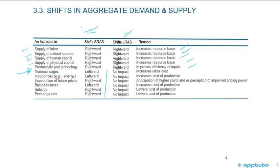Now we get into where there are some differences — and this is an area you'd look for in multiple choice questions. The first five are easy to understand. But if we look at an increase in nominal wages: wages going up is an increase in an input price, so in the short-run aggregate supply you'll have a leftward movement, but no impact on the long run. Input prices behave the same as labor — same impact.